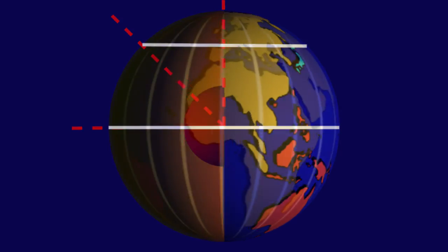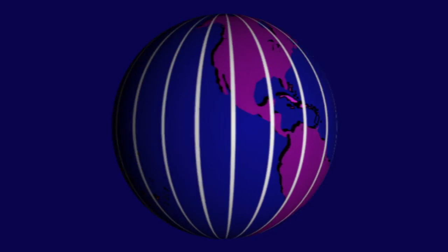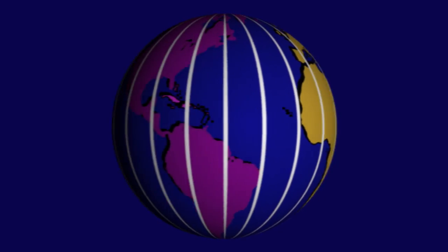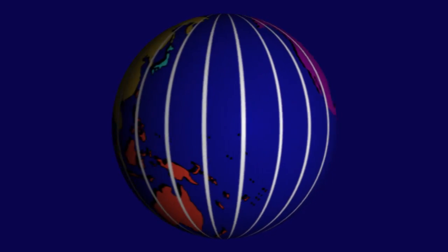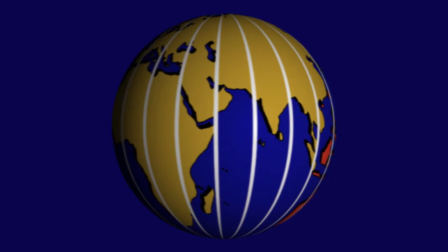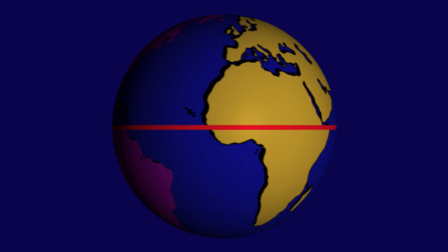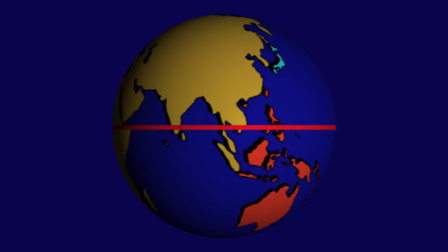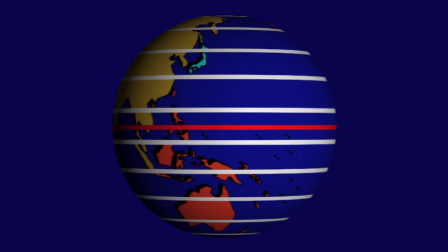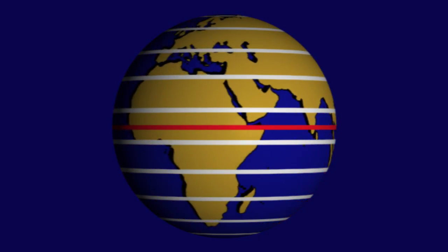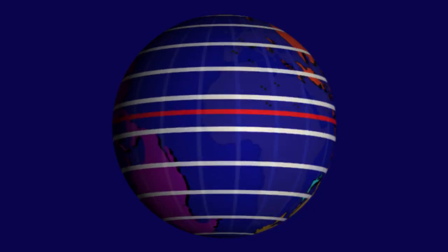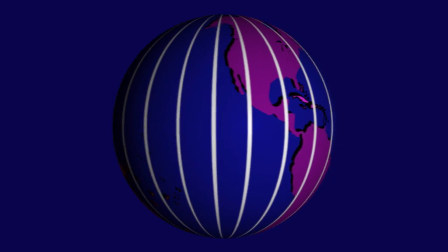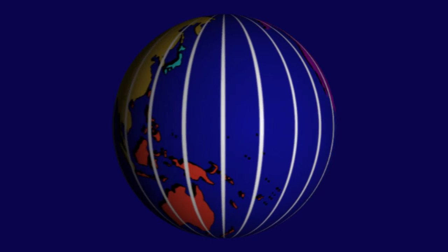Longitude is not so easy to visualize. These are lines that all pass through both poles, and thus encircle the full circumference of the Earth. This is one way to remember longitude from latitude — only the 0 degree latitude line, the equator, encircles the full circumference of the Earth. Any latitude other than 0 is smaller than the full Earth's circumference. Longitude lines are always long, going around the full circumference through both poles.